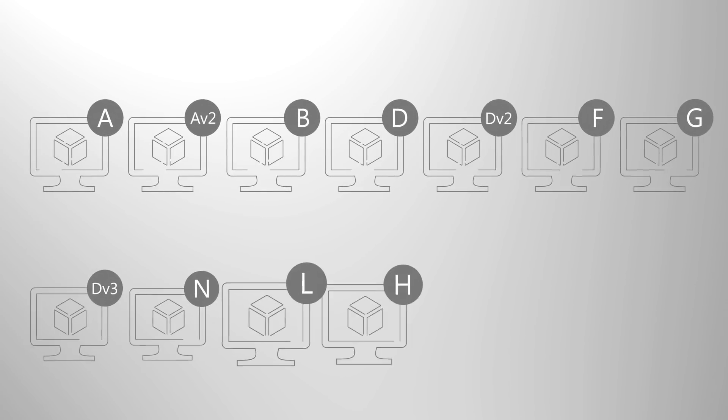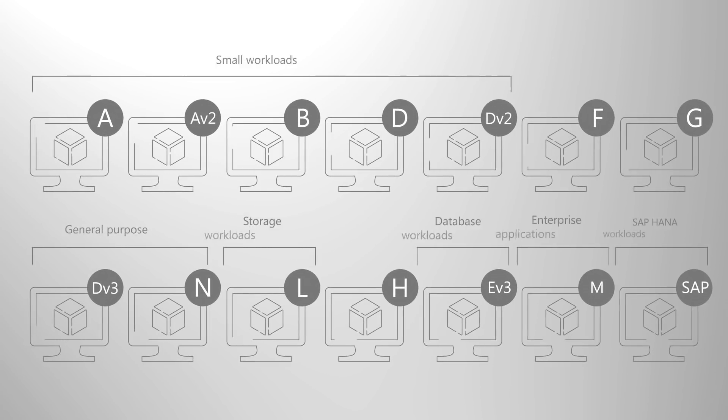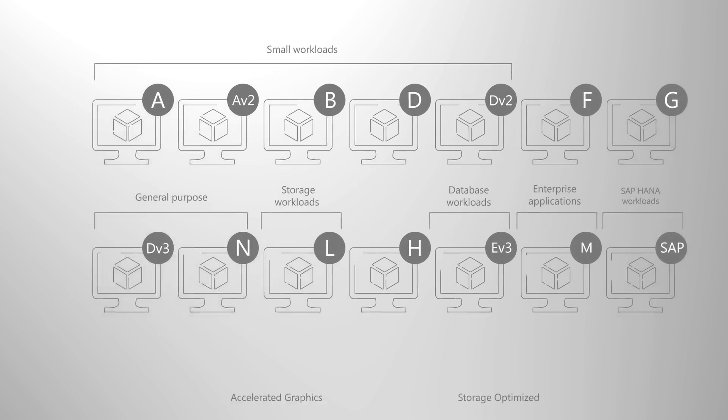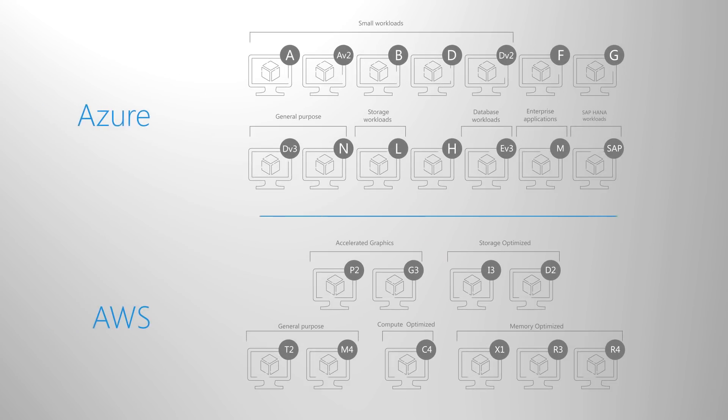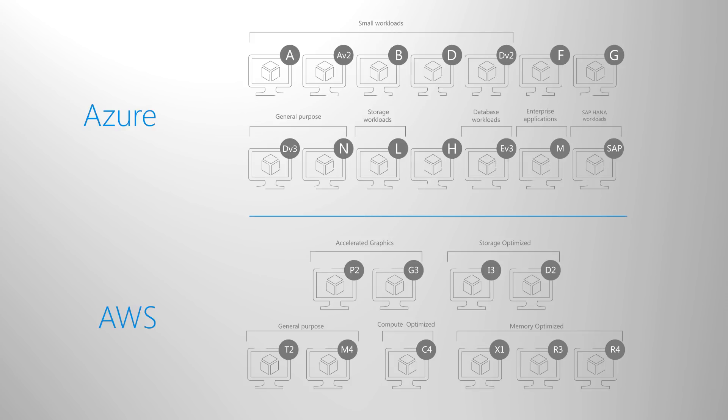Now let's take a look at core services across compute, storage, and management. Compute options are very similar between AWS and Azure. You'll find a similar range of on-demand virtual machine sizes in Azure to the EC2 instances in AWS, although you'll notice some differences in the memory, CPU, and storage options.